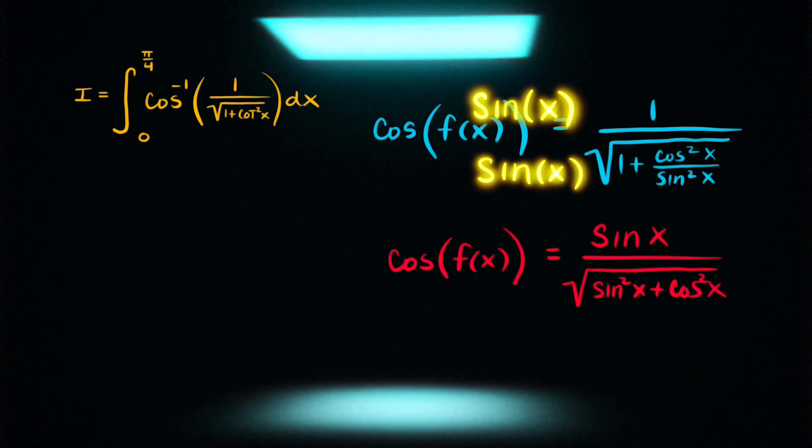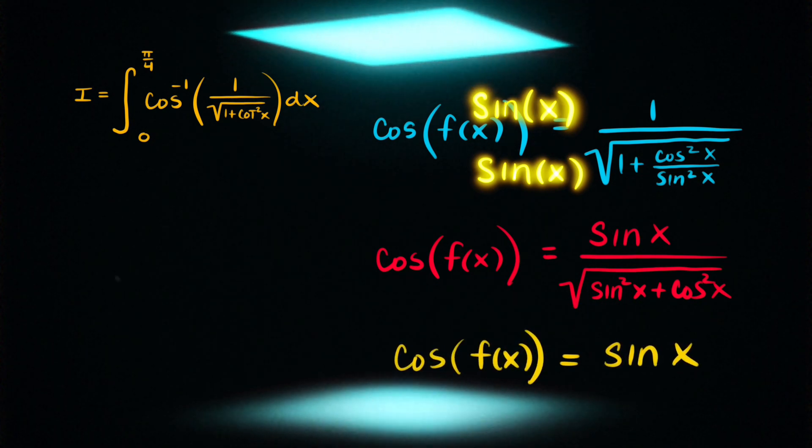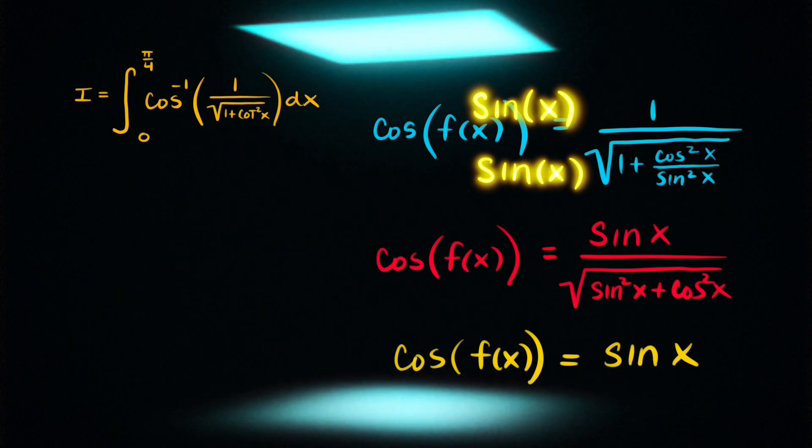And that's going to give us that the cosine of f is equal to the sine of x over the square root of sine squared plus cosine squared. And that identity, sine squared plus cosine squared, is equal to 1. So we just get cosine of f is equal to the sine of x.